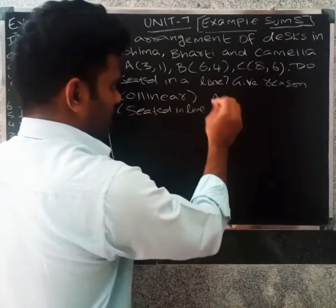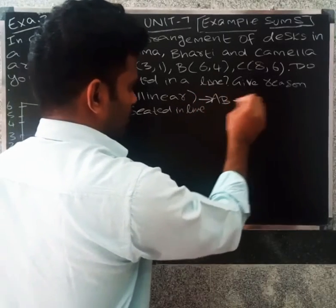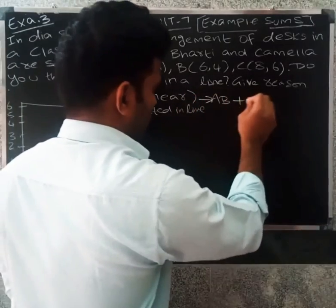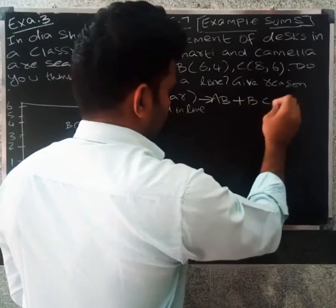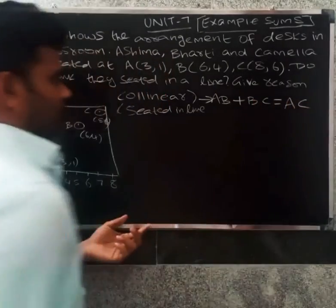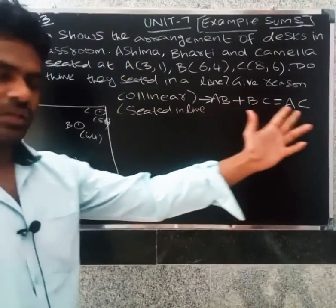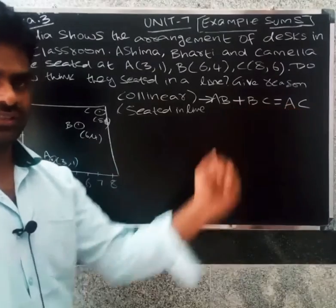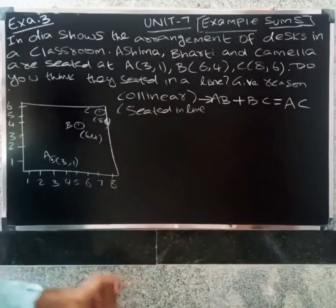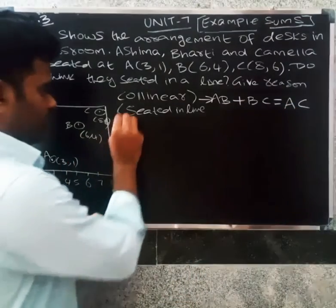The condition for collinear points is AB plus BC equal to AC. So if we add the first two distances and they equal the third distance, then the points are collinear. Okay, so the first step is to find the distance AB.